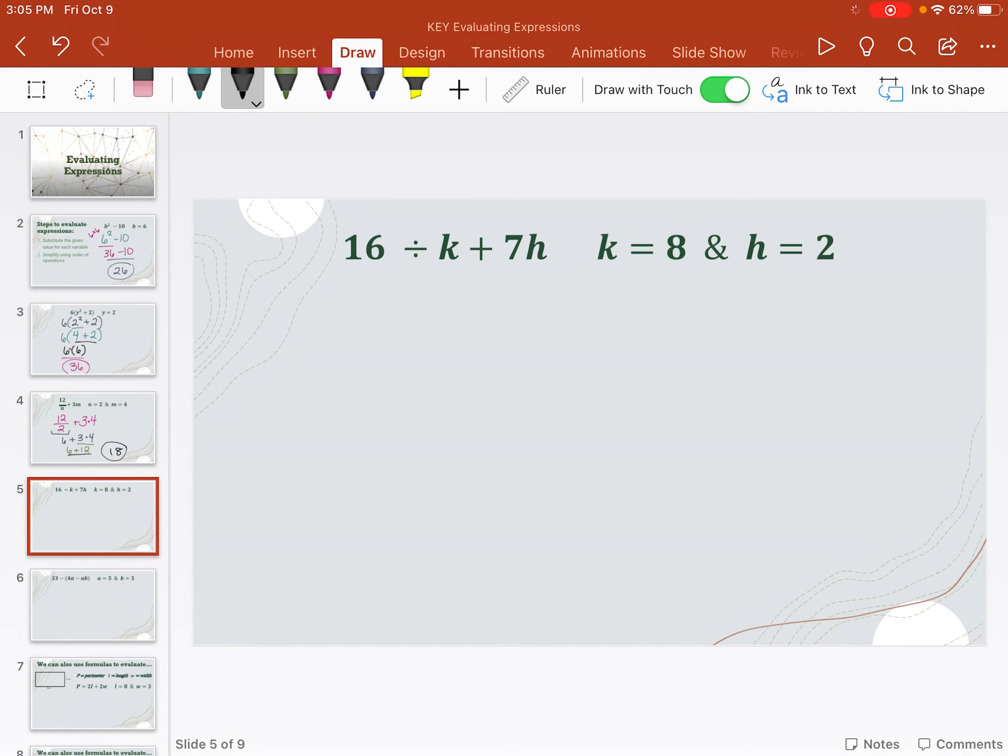All right. Go ahead and substitute in for this one. Okay, let's just make sure you substitute it in right. So it should be 16 divided by 8, because the k was 8, plus 7 times 2, because the h was 2. Make sure you have it substituted in right. And then go ahead and solve it using PEMDAS.